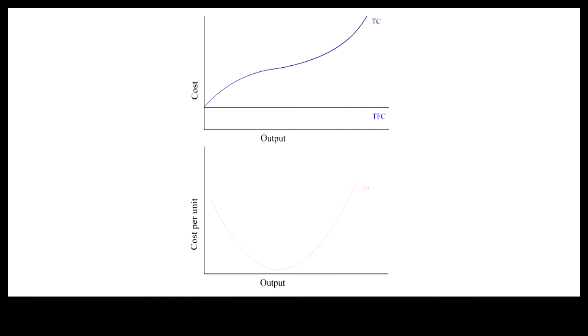When TC is divided by a given level of total output, we get average total cost, ATC. At Q1, ATC is equal to TC1 divided by Q1. Since TC1 divided by Q1 also measures the slope of the ray from the origin to TC, the ray slope provides a visual indication of the numerical value of ATC. The numerical value of ATC is plotted on the graph below.